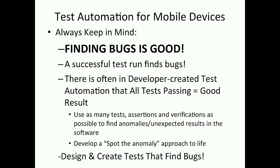On our last notes, finding bugs is good. To me, a successful test run is one that finds bugs. Too many people want all the nice little lights to turn green — I want to see reds there. A good test is one that finds bugs. So design and create tests that find bugs. Use as many assertions and verifications as possible to find anomalies — anything unexpected. Develop that 'spot the anomaly' approach to everything in life.